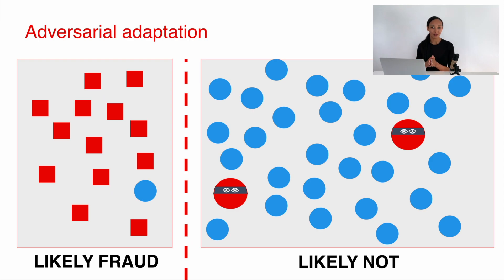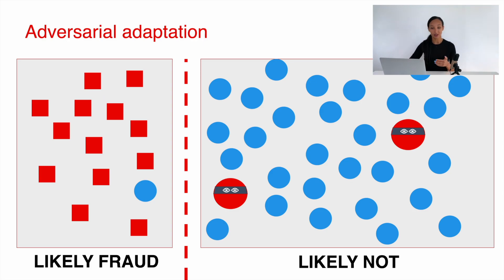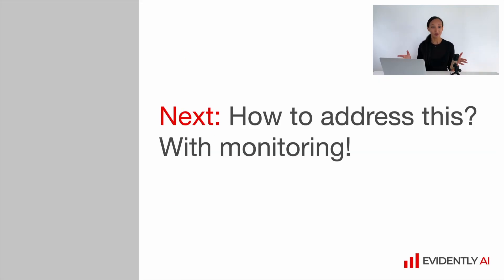Now we live in the world of neural networks and sometimes we might face some adversarial adoption. We need to make sure that we are prepared for it and monitor it. So now you know that there are quite a lot of things which can go wrong in production, and the next question is how to address this.